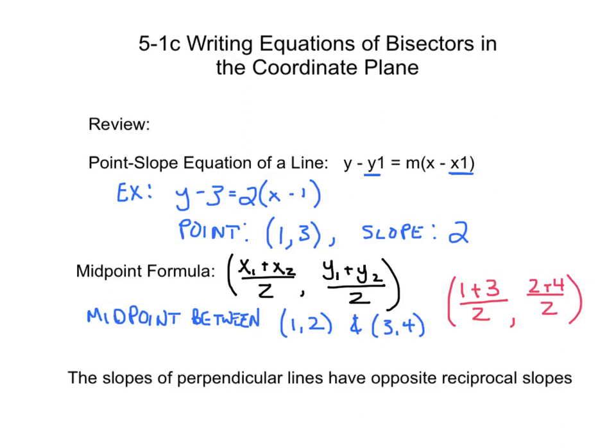The last piece of review information is simply a quick statement that the slopes of perpendicular lines have opposite reciprocal slopes. And that's it for review — now we can jump into some new material.